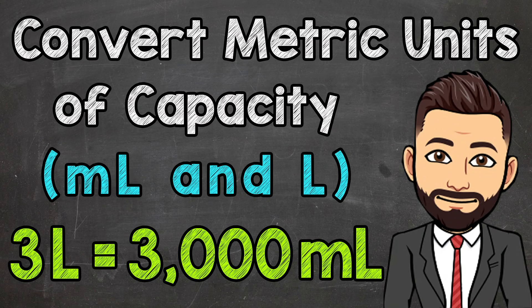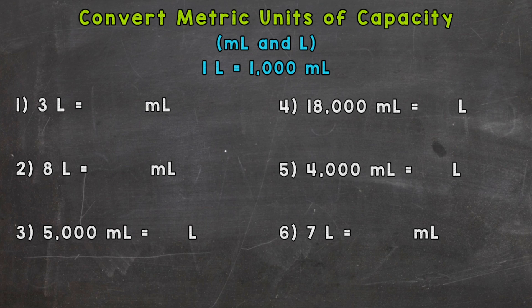Welcome to Math with Mr. J. In this video we're going to convert metric units of capacity, specifically working with milliliters and liters. A milliliter is about the size of a large drop of water — a large raindrop. A liter is about two bottles of water, and if you think about the grocery store or your house, you may have some two-liter bottles of pop, so half of that bottle.